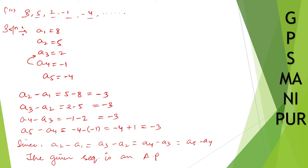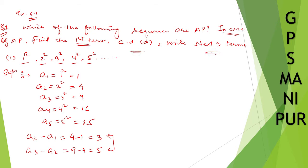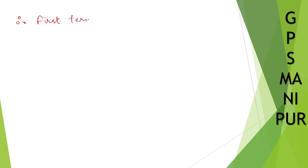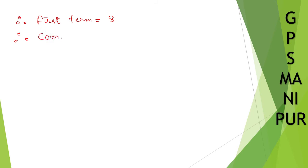Since it is an AP, let us find the first term and common difference. Therefore, first term a is equal to 8. Common difference d is equal to -3.